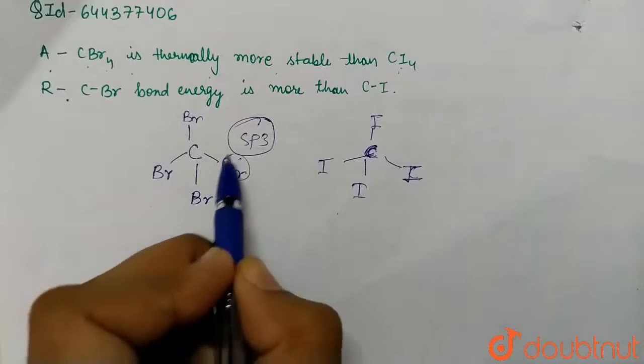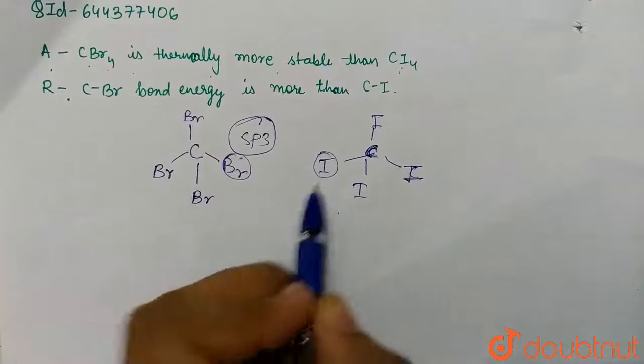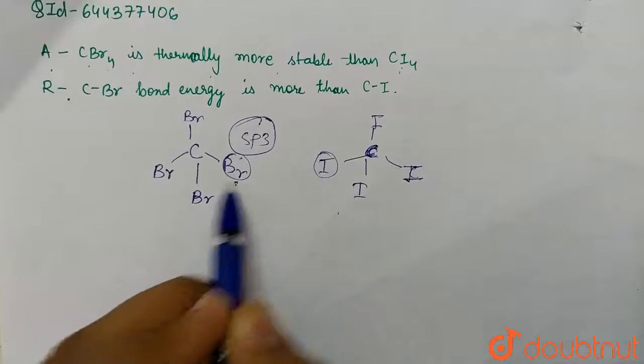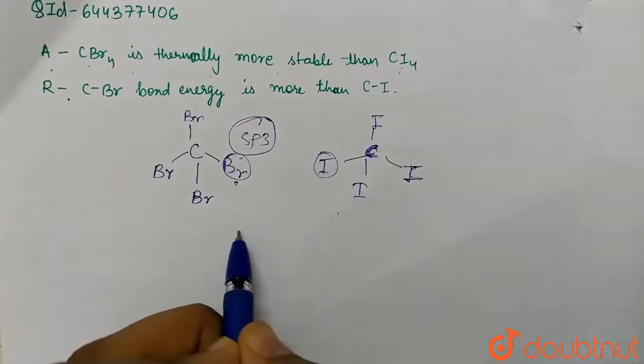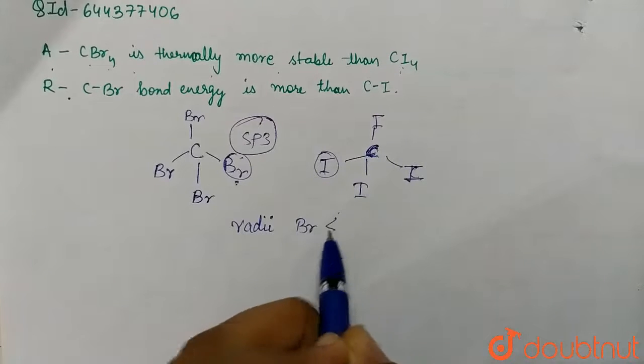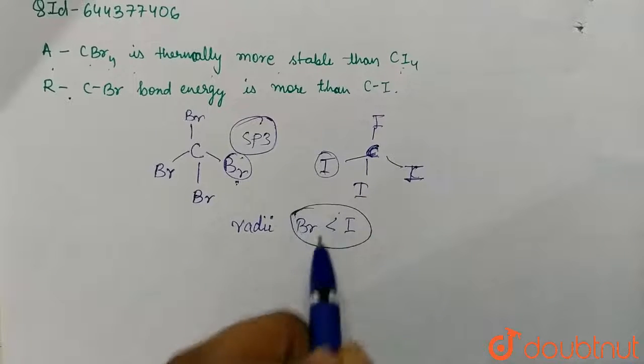Now here we have bromine and iodine as substituents. Bromine is smaller in size compared to iodine, so we can write that the radius of bromine is less than that of iodine.